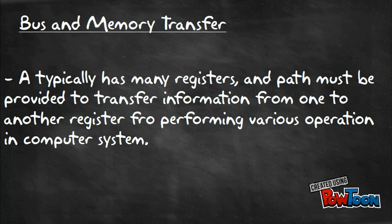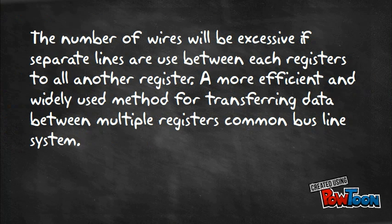Many registers and paths must be provided through the transfer of information from one to another, performed by various operations of the computer system. The number of wires will be excessive if separate lines are used between each register and all other registers. A more efficient and valuable method for transferring data between multiple registers is common bus lines.